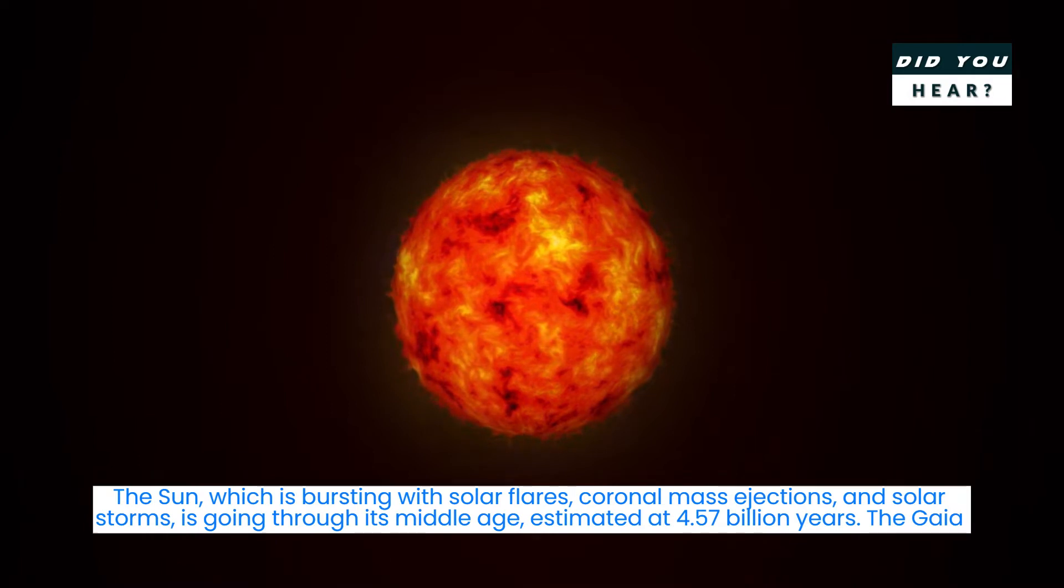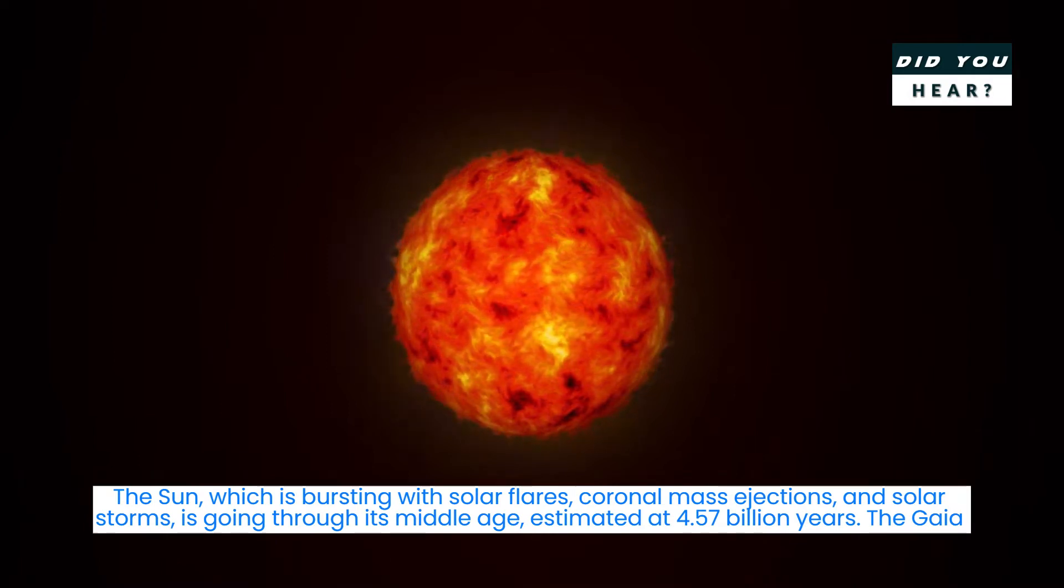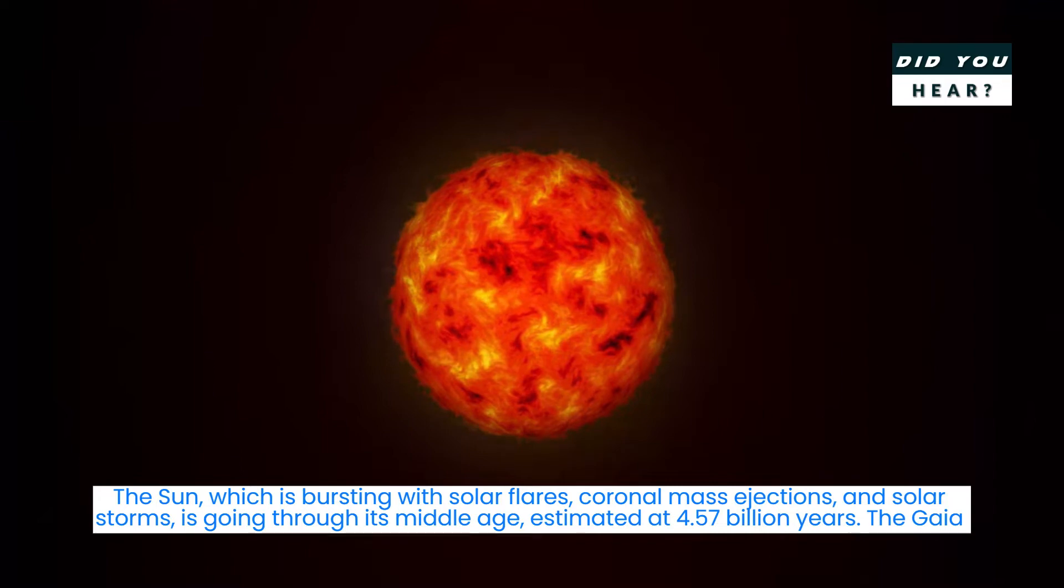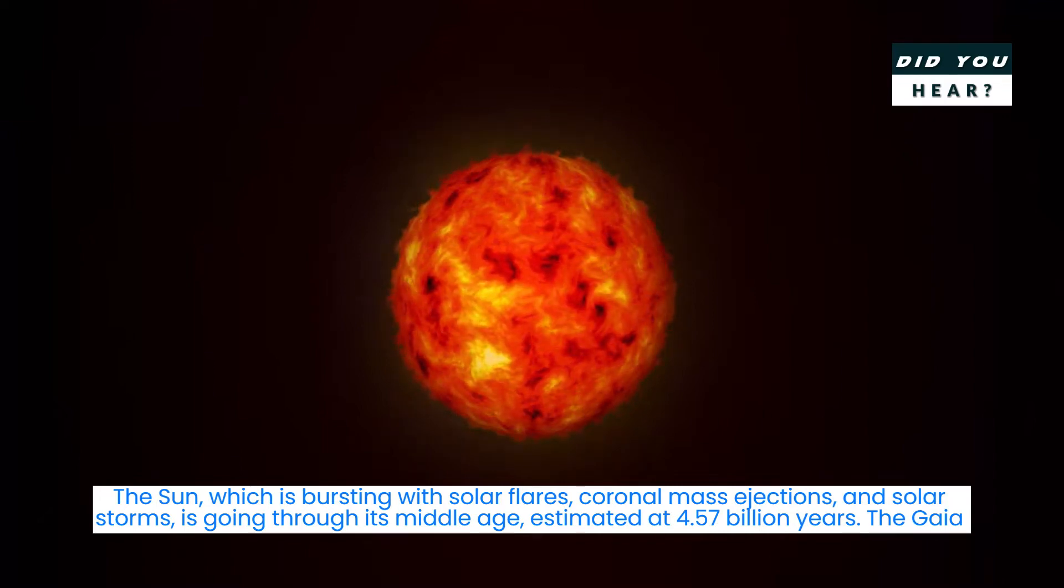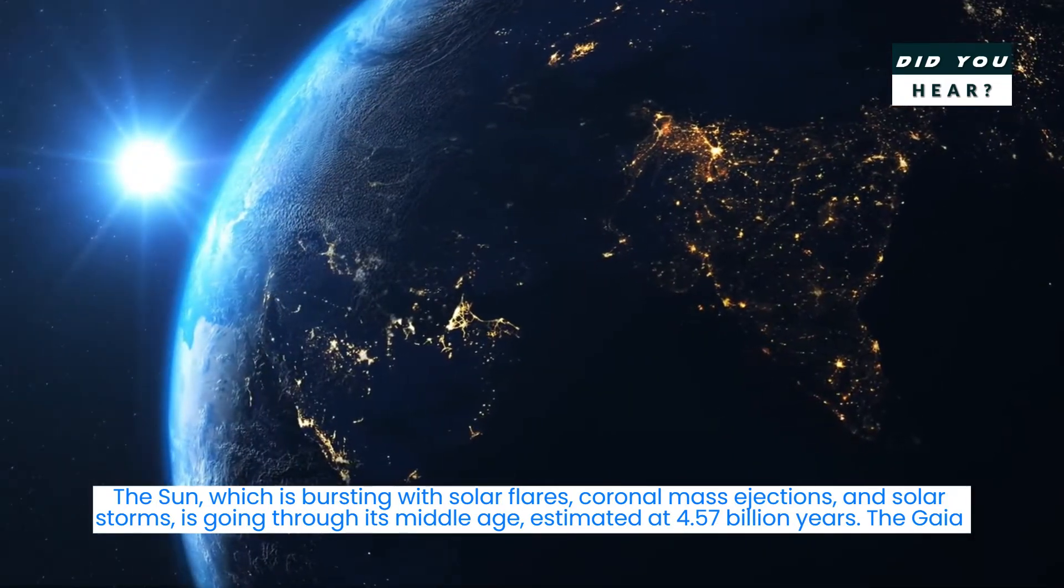The sun, which is bursting with solar flares, coronal mass ejections, and solar storms, is going through its middle age, estimated at 4.57 billion years.